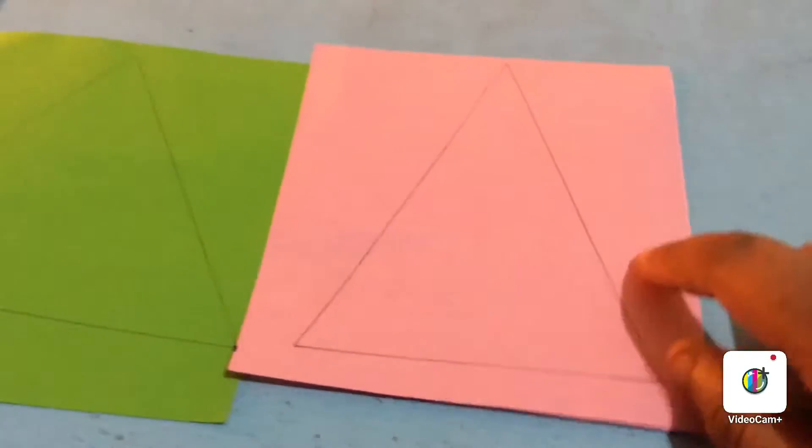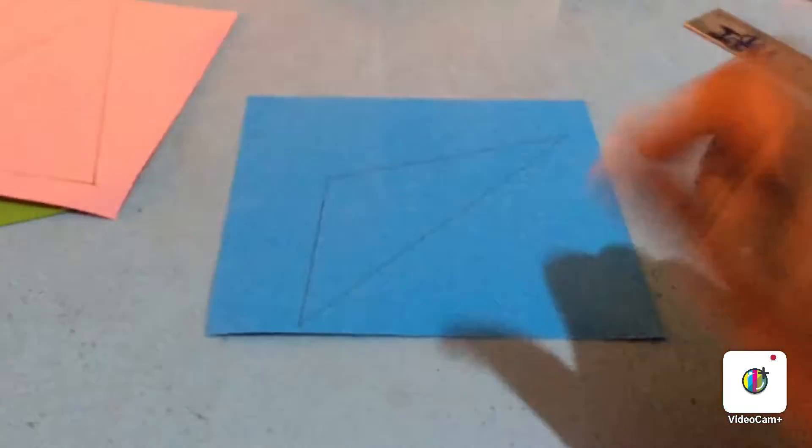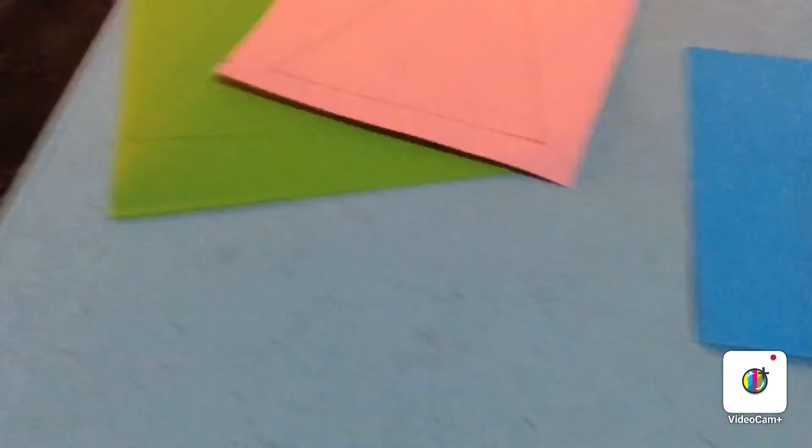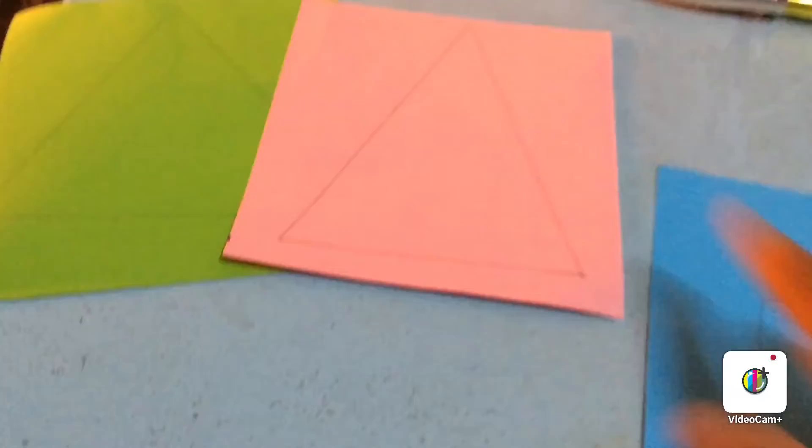Like this, one triangle - it's an equilateral triangle. Next, it's an isosceles triangle. As you know, we have three types of triangles, so the last one is scalene. Now we have three types of triangles: equilateral triangle, isosceles triangle, and scalene triangle.